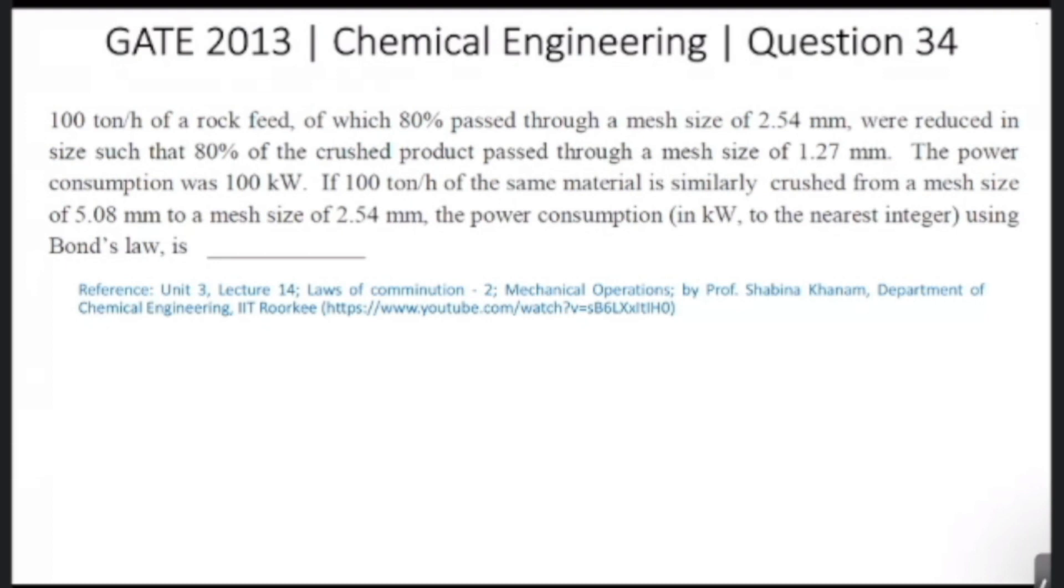The power consumption was 100 kilowatts. If 100 ton per hour of the same material is similarly crushed from a mesh size of 5.08 mm to a mesh size of 2.54 mm, the power consumption in kilowatt to the nearest integer using Bond's law is?